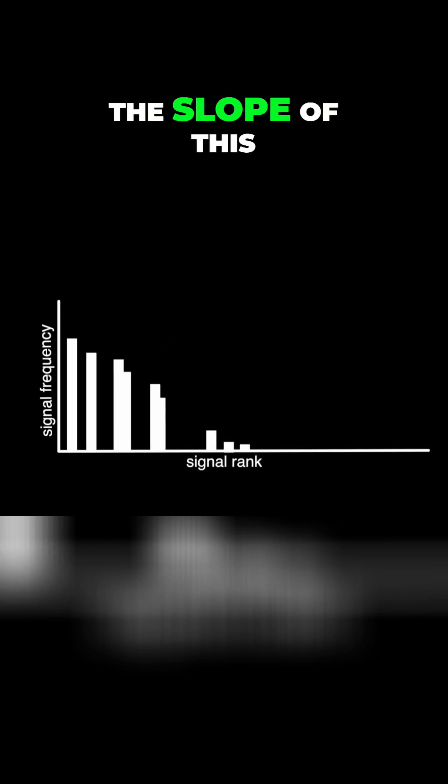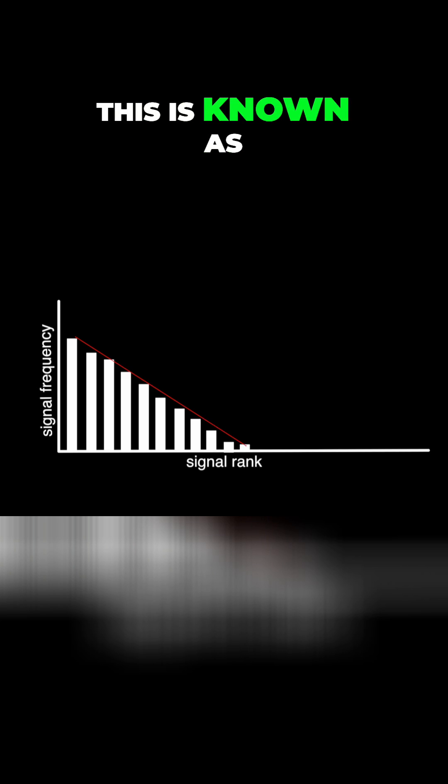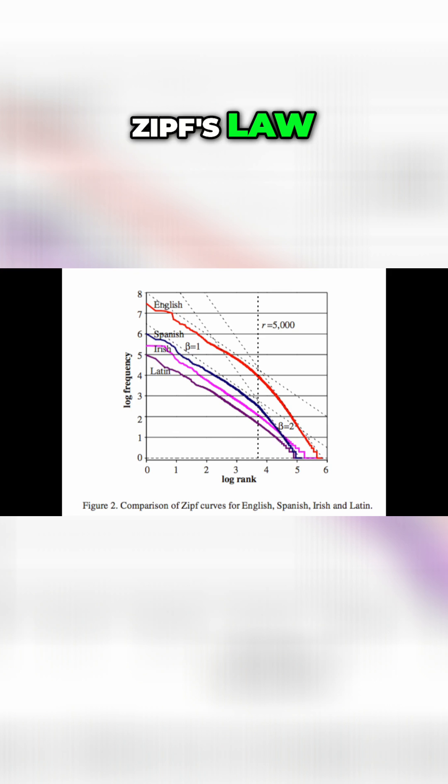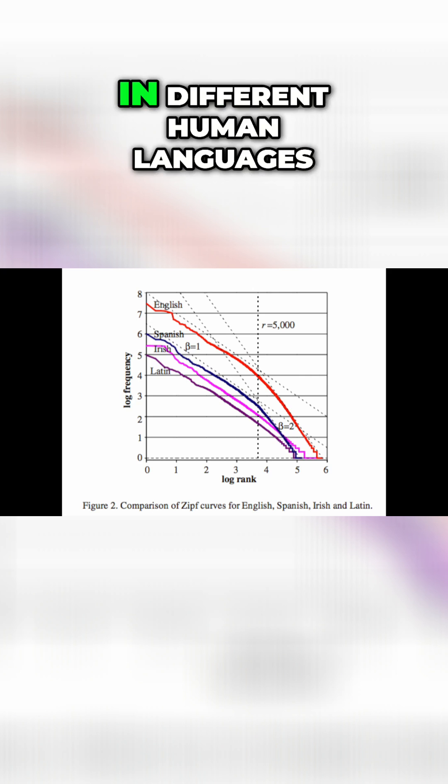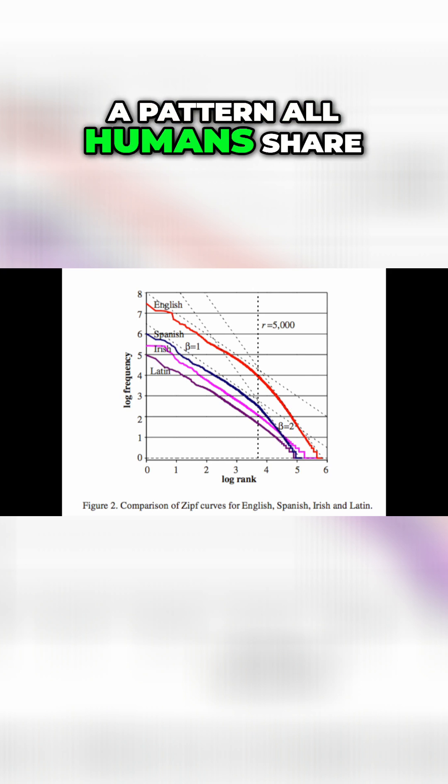Consequently, the slope of this graph converges towards a 45-degree angle. This is known as Zipf's Law. What's interesting is that this same slope appears in different human languages and seems to be a pattern all humans share.